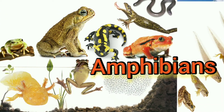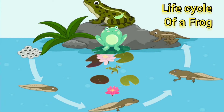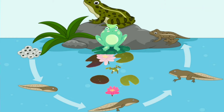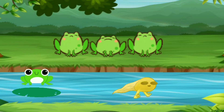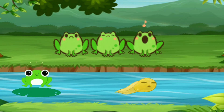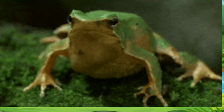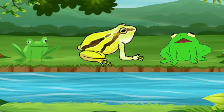Amphibians can live in water as well as on land. Did you know? The word amphibian means two lives. All amphibians begin their life in water with gills and tails. As they grow, they develop lungs and legs for their life on land. They have gills to breathe underwater and lungs to breathe on land.